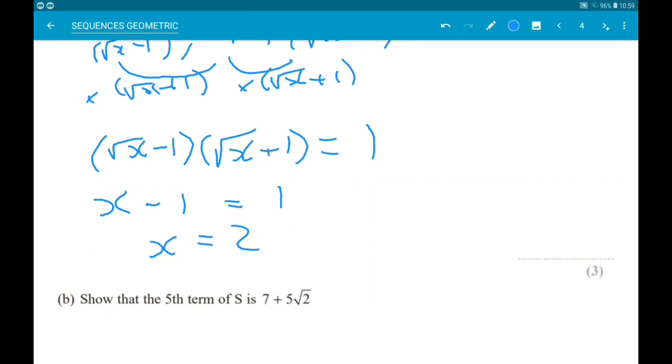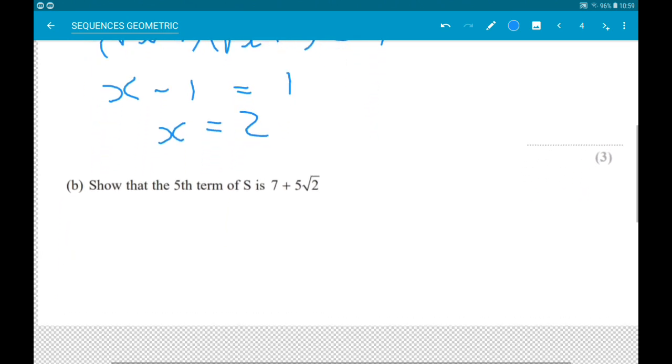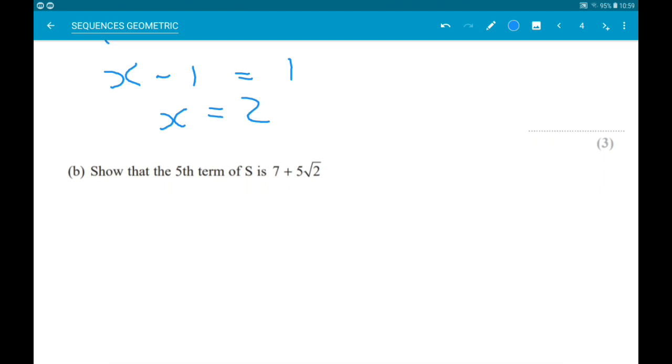Given part B, we want to show that the fifth term of s is 7 add 5 root 2. So, now that we know what x is, we know the first three terms. So, we have root 2 minus 1, 1, and root 2 plus 1.